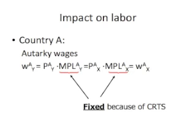Importantly, in the Ricardian model, marginal productivity of labor remains constant in both sectors regardless of how many workers are used. That is to say that MPL is constant for these workers whatever else happens — changes in prices, changes in production, whatever.